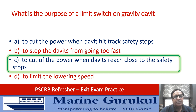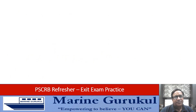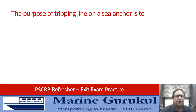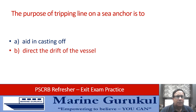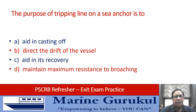The purpose of the tripping line on a sea anchor is to: aid in casting off, direct the drift of the vessel, aid in its recovery, or maintain maximum resistance to rushing water. The answer is C — aid in its recovery.